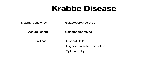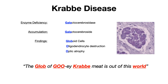Next is Krabbe disease. The enzyme deficiency is galactocerebrosidase, and the accumulating substrate is galactocerebroside. Findings include globoid cells, oligodendrocyte destruction, and optic atrophy. The mnemonic is: 'The glob of gooey crab meat is out of this world.' 'Crab' = Krabbe disease; 'glob' = globoid cells; 'GOO' = globoid, oligodendrocyte destruction, optic atrophy; and 'world' evokes 'galaxy,' reminding you of galactocerebrosidase and galactocerebroside.